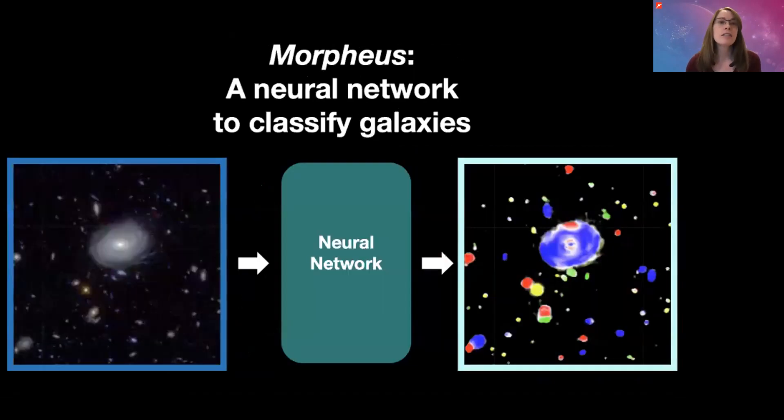So how did they do this? In order to get a computer program to recognize galaxies on its own, they turned to a kind of artificial intelligence called neural networks. These are programs that are really good at recognizing patterns, and they're built on principles that are meant to mimic how our own brains recognize images.